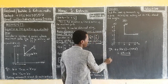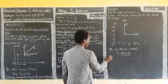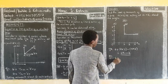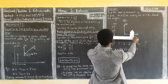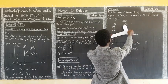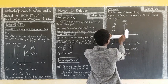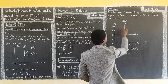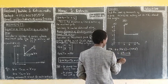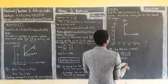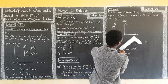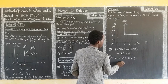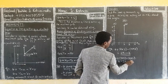Now taking moments anticlockwise: the perpendicular distance is 2, so we get 3 times 2. Then coming to the horizontal component, it is going to go clockwise, which means when taking anticlockwise it becomes negative: minus 4 times 2. This gives us negative 2 Newton-units.